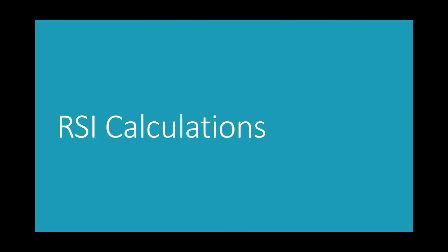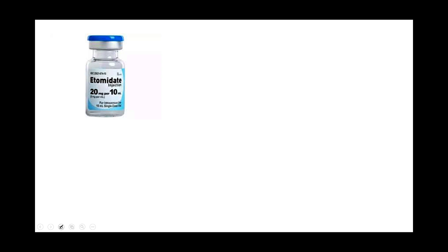I'm going to do RSI calculations and talk about easy drug dosages. I want to work with etomidate first as an option and show you some easy calculation-type dosages. The dose for RSI is 0.3 milligrams per kilogram. The concentration of etomidate is always the same — 2 milligrams per milliliter. I'm going to do the long calculations first and then show you some really easy shortcuts.